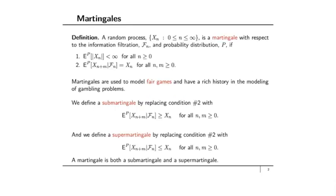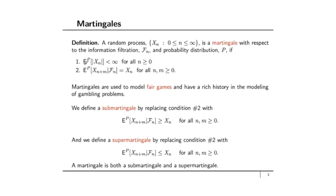We're going to have the following definition of a martingale. A random process Xn is a martingale with respect to the information filtration Fn and probability distribution P if these two conditions are satisfied. The first condition is a technical integrability condition, which states that the expected value of the absolute value of Xn must be finite for all n. The really important condition is condition 2, which states that the expected value of Xn+m given Fn is equal to Xn for all n, m greater than or equal to 0.